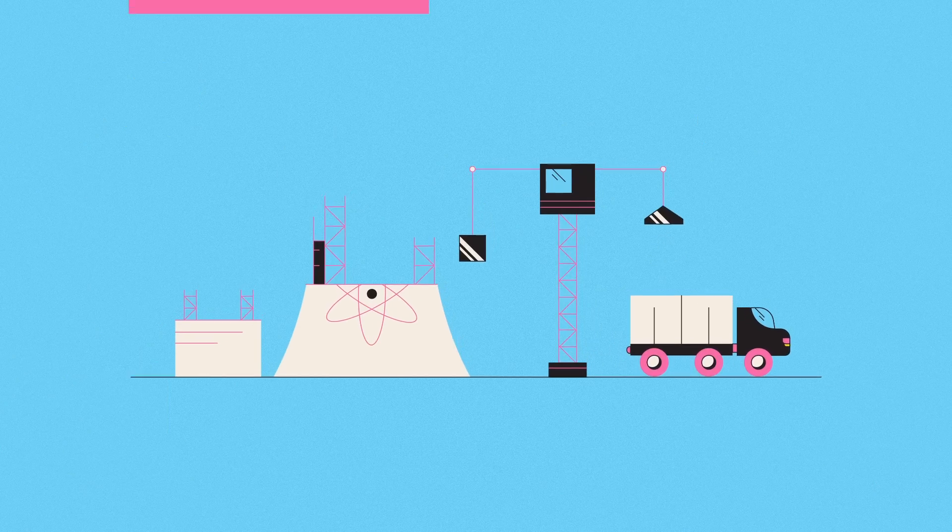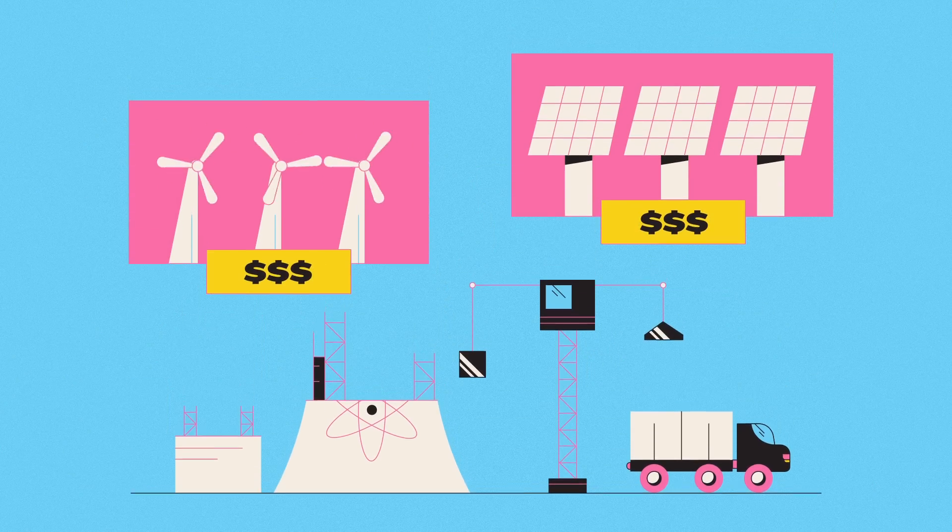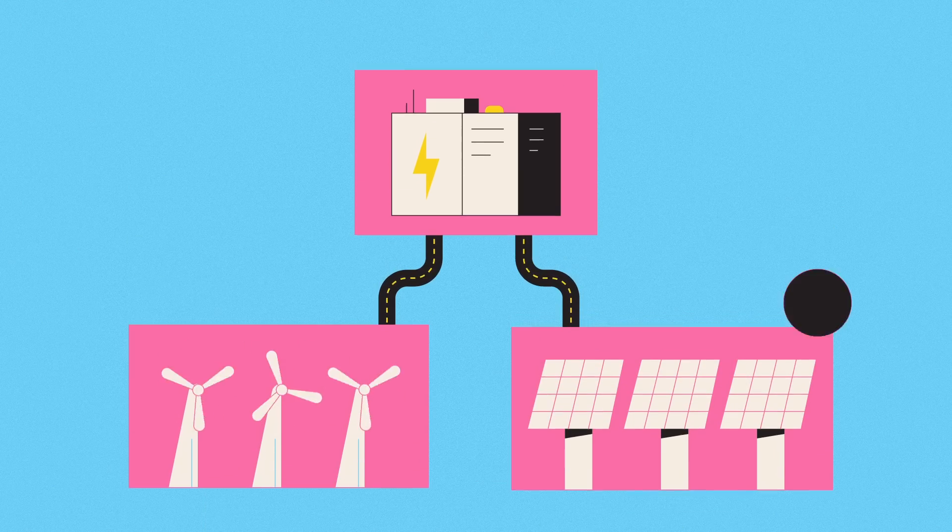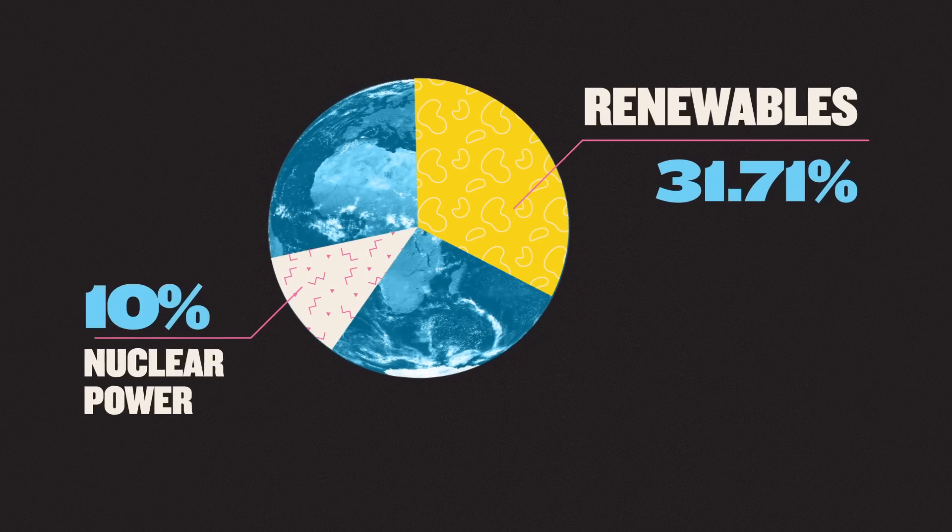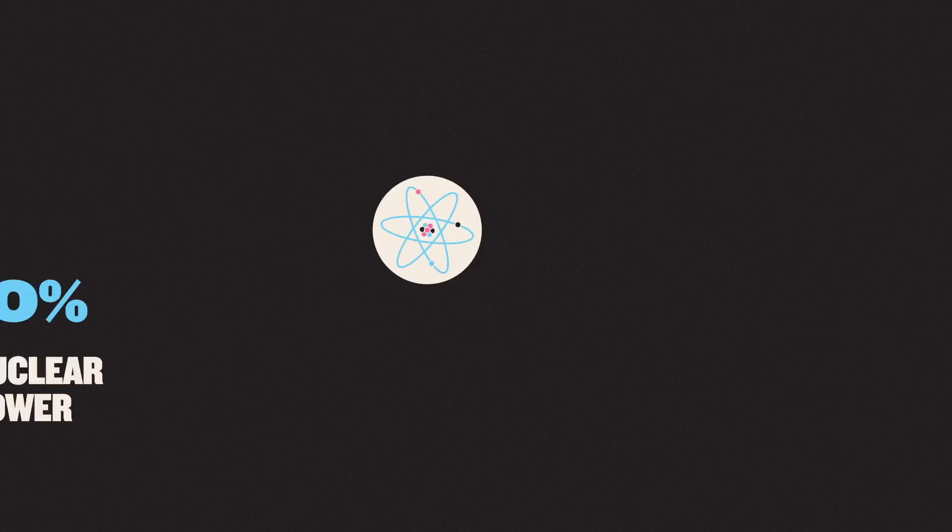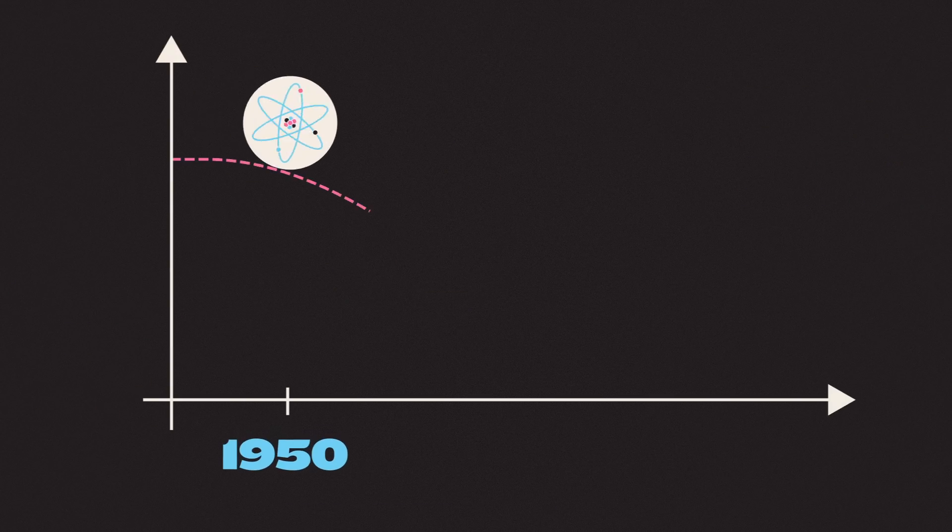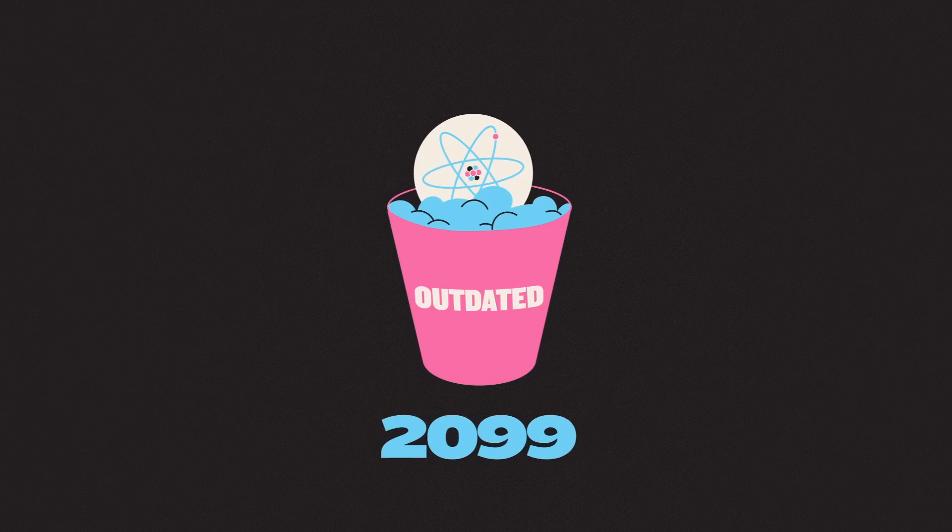And while construction drags on, wind and solar power get cheaper, and batteries get better at storing electricity for cloudy, windless days, meaning renewables account for a growing share of our clean energy. Altogether, it would seem the atomic age is unlikely to last the rest of this century.